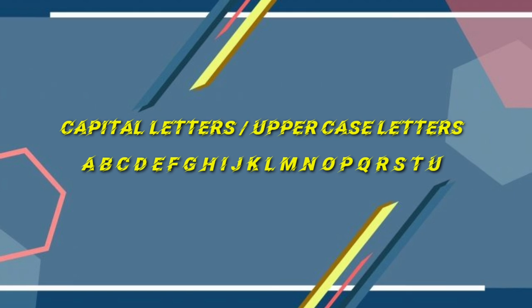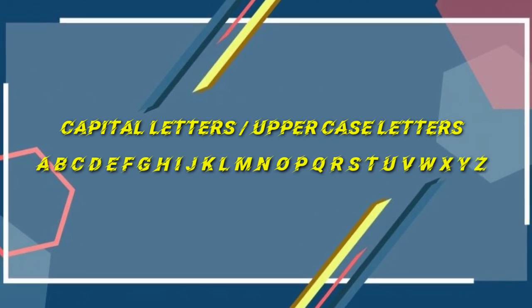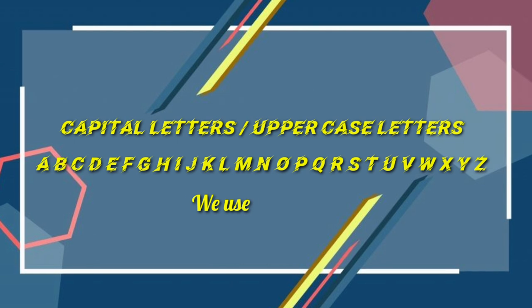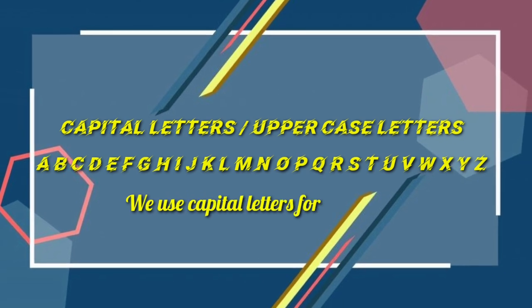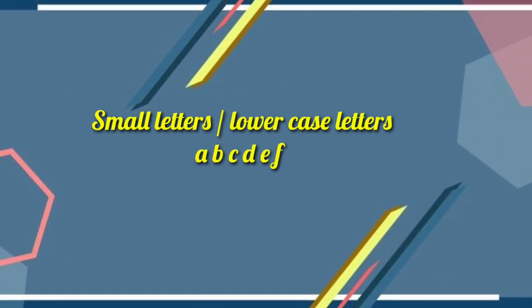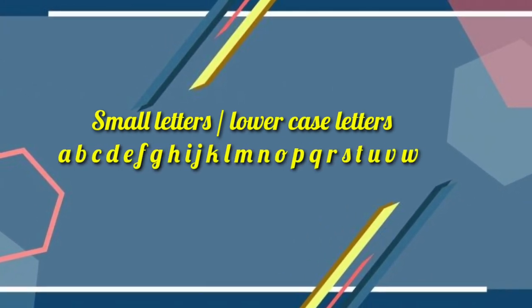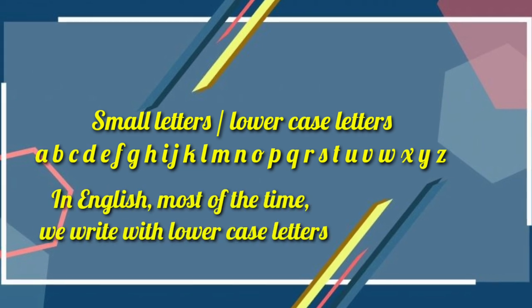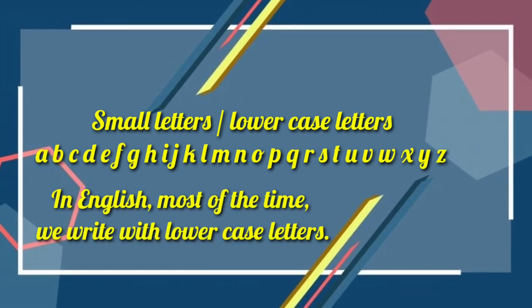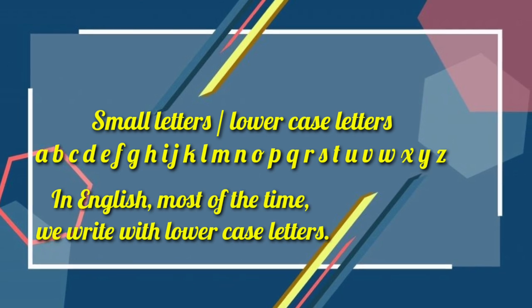A to Z alphabets are 26 letters. These are the large letters, larger than the small letters. We use capital letters for specific situations. Small letters are called lowercase letters — also 26 letters. In English, most of the time we write with lowercase letters. In this grammar, we will learn the rules for when to use capital letters.